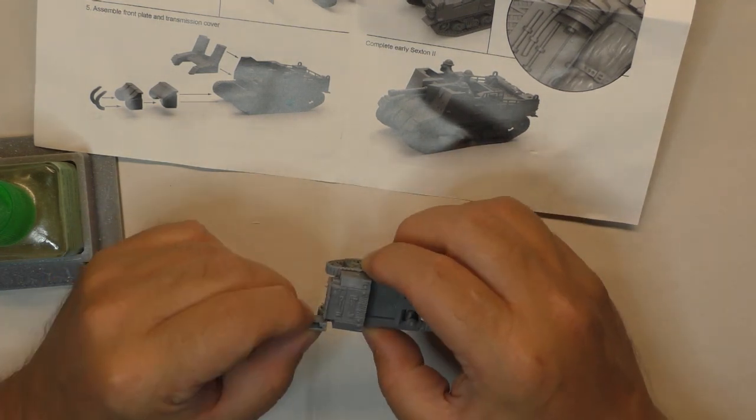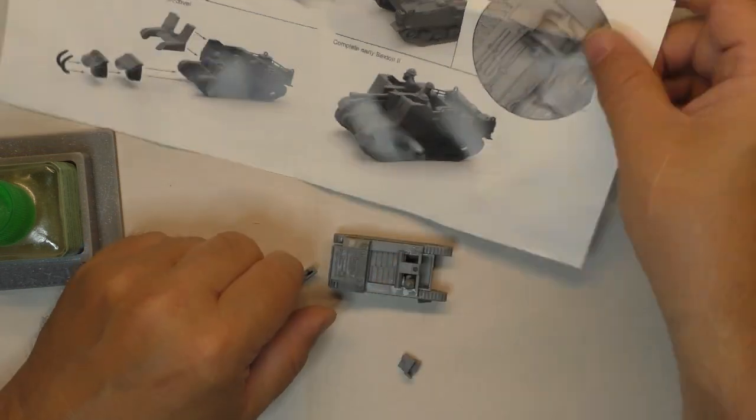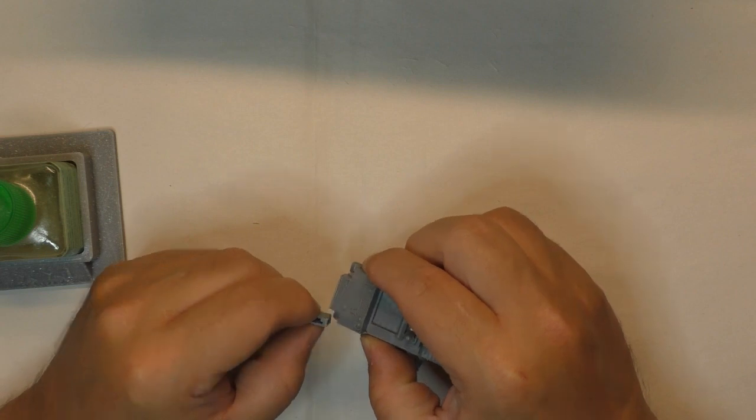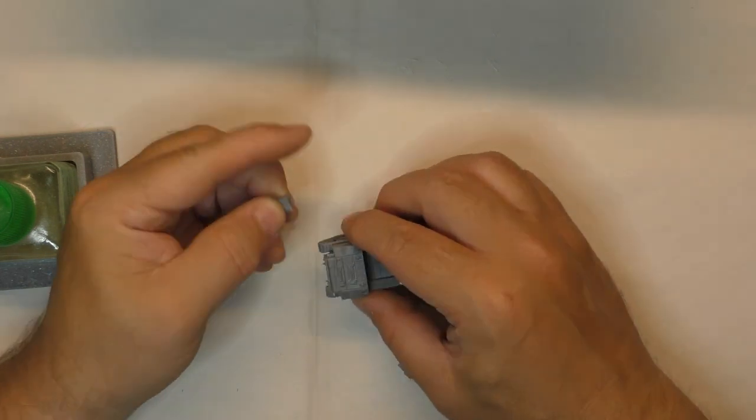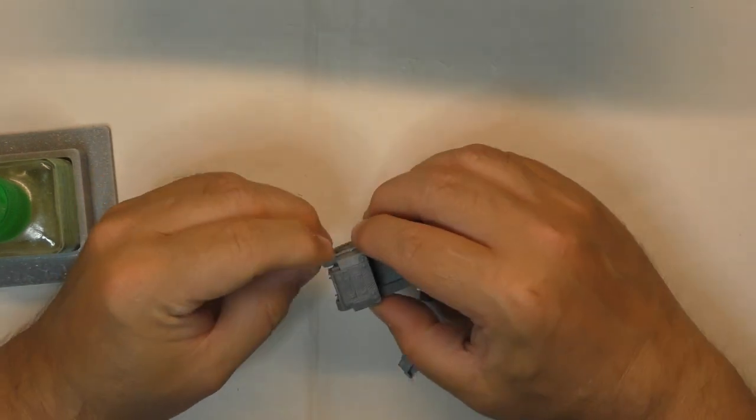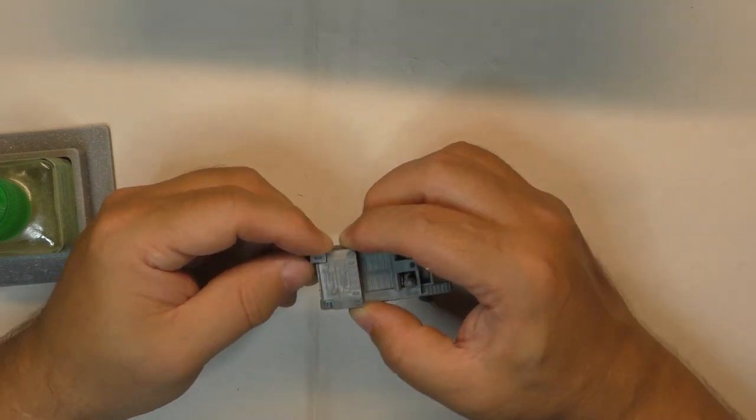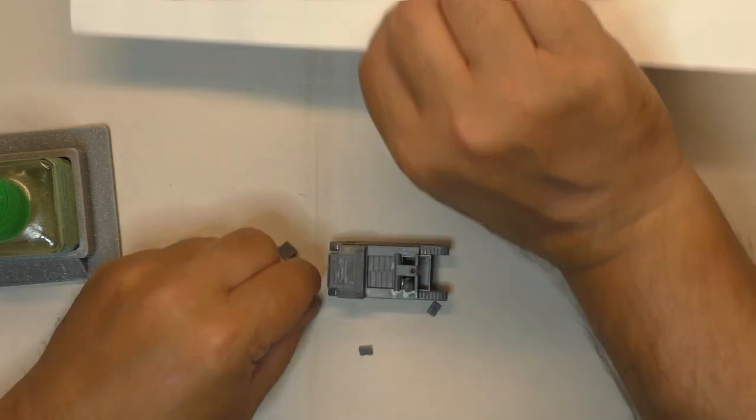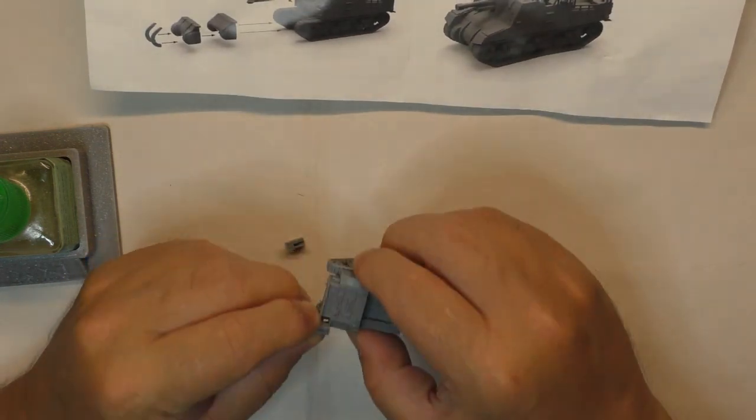From there it's time to put in the back the wall that have a little fence in the back of the vehicle. And then at this step I'm a bit clumsy there but it's important to verify to make sure they go at the right place.